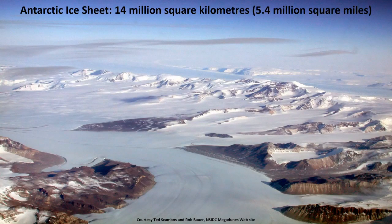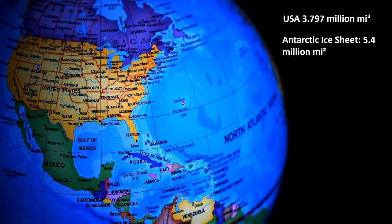Finally, it is useful to have an idea of the true scale of our current ice sheets. The Antarctic ice sheet covers 5.4 million square miles, which is 40% more than the entire United States of America.